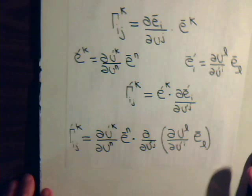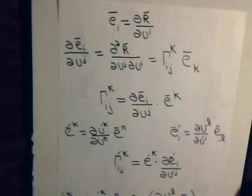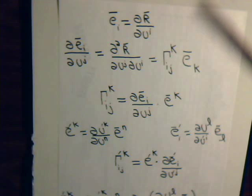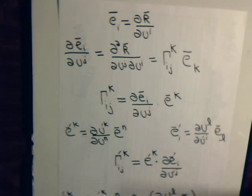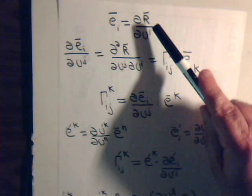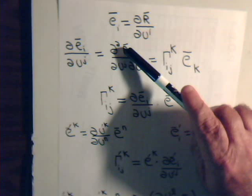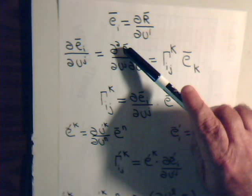Now, remember that a couple of videos ago, each tangential vector is the partial derivative of the position vector with respect to one of the curvilinear coordinate axes. What we did was take the partial derivative of the tangential vector with respect to one of the coordinate axes — or that would be the same thing as taking the second derivative. Since we're taking the partial of e_i, and e_i is this, that's the same thing as taking the second derivative of the position vector. And here is where we introduce the concept of Christoffel symbols.